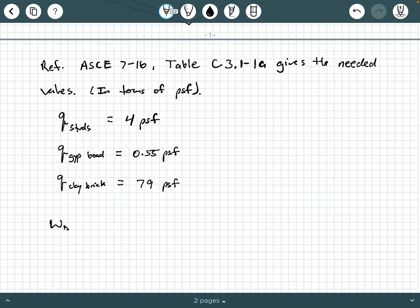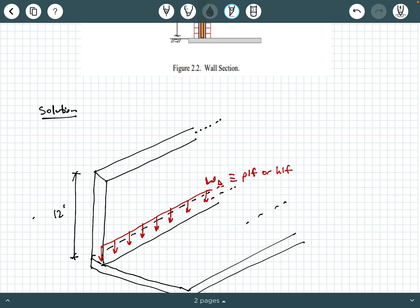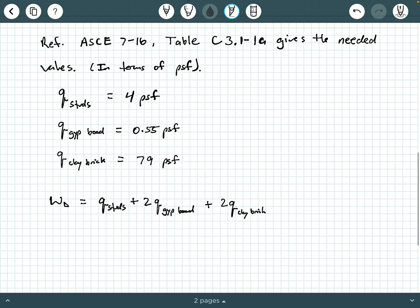Let's piece it all together. W dead as a uniform load in PLF is going to be Q studs plus two times Q gypsum board plus two times Q of the clay brick. Now you want this uniform dead load in PLF or KLF, you want this as a line load. Be careful with your units. These values are given in pounds per square foot.